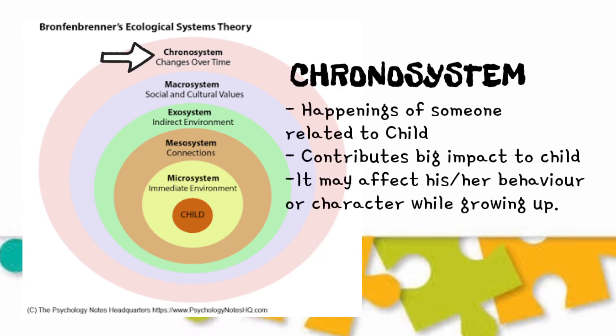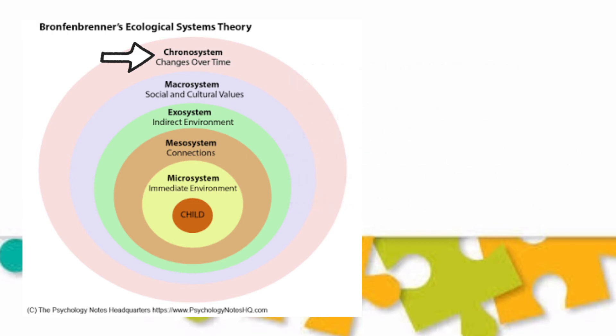The chrono-system is the last layer. It involves the happenings related to the child that contribute a big impact to his or her life. The best examples are the death of a loved one or the divorce of the child's parents. This will cause a change in his attitude or behavior as he grows up.